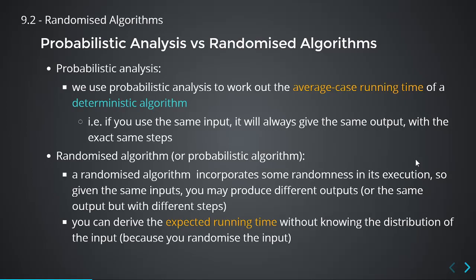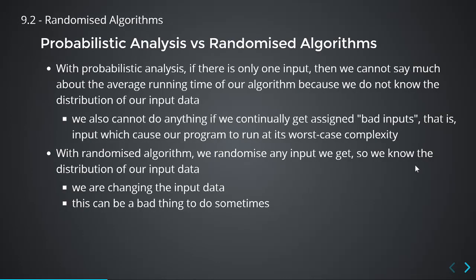Make sure you understand the difference between what we're doing now and what we did before. This time, we are adding randomness into the algorithm — we make it part of the algorithm. Whereas before, we're using probability theory. With probabilistic analysis, if there's only one type of input and you don't know the distribution, your assumption can be wrong. Your data can be bad all the time, forcing you close to the worst-case complexity, and there's nothing you can do about it.